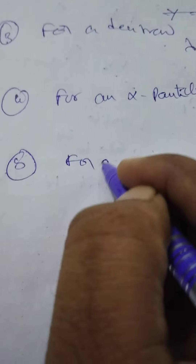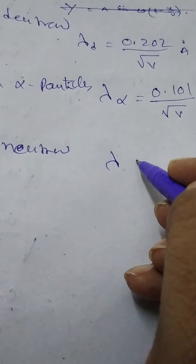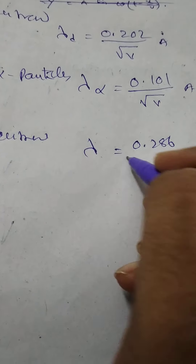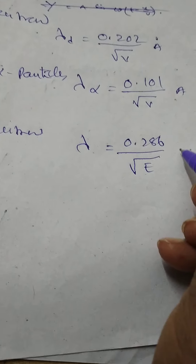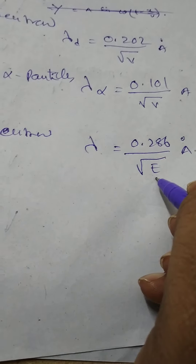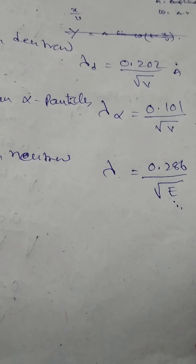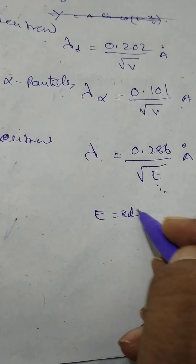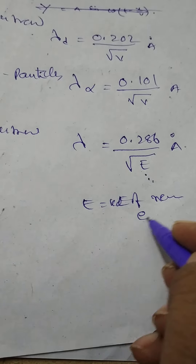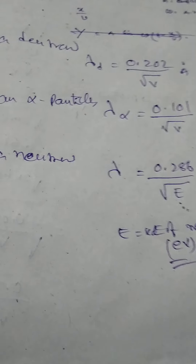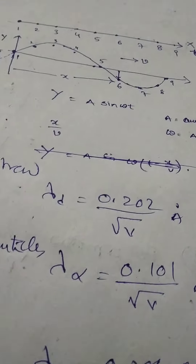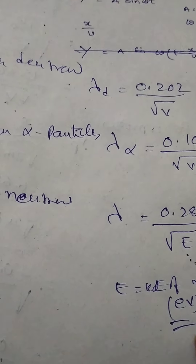For a neutron, lambda is equal to 0.286 by root E angstrom units, where capital E is equal to total energy of the neutron — that is the kinetic energy of the neutron — represented in electron volts. These are the different formulas for the de Broglie wavelength corresponding to electron, proton, alpha particle, and neutron.